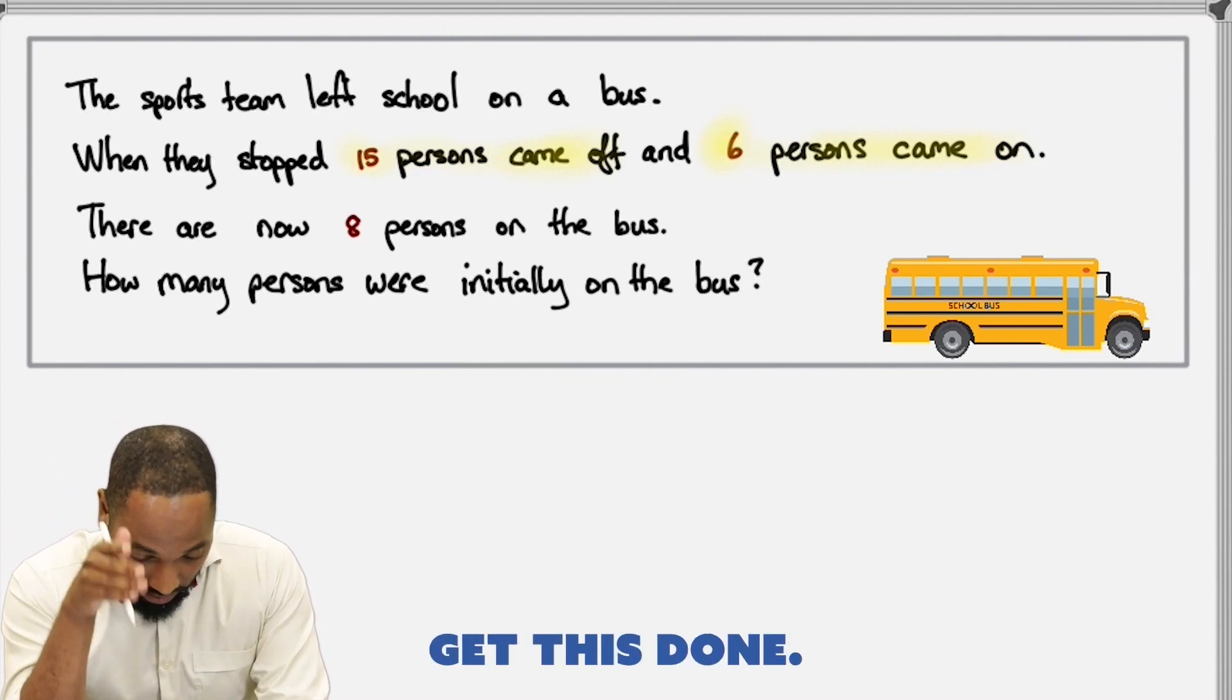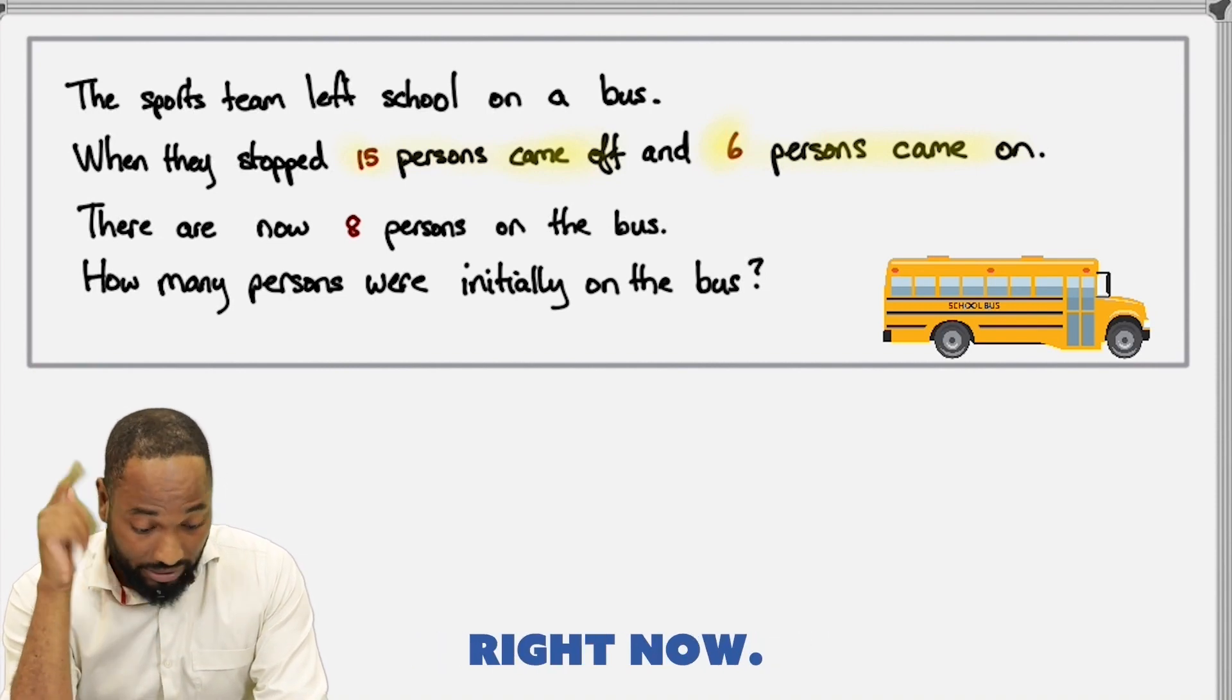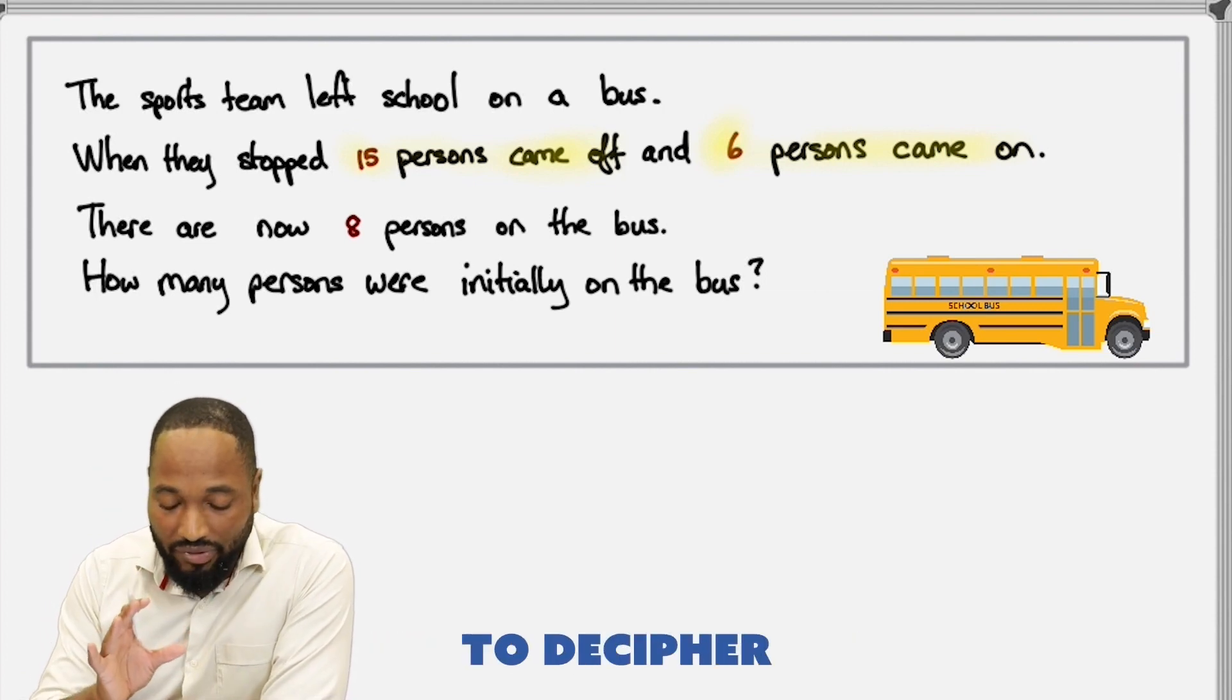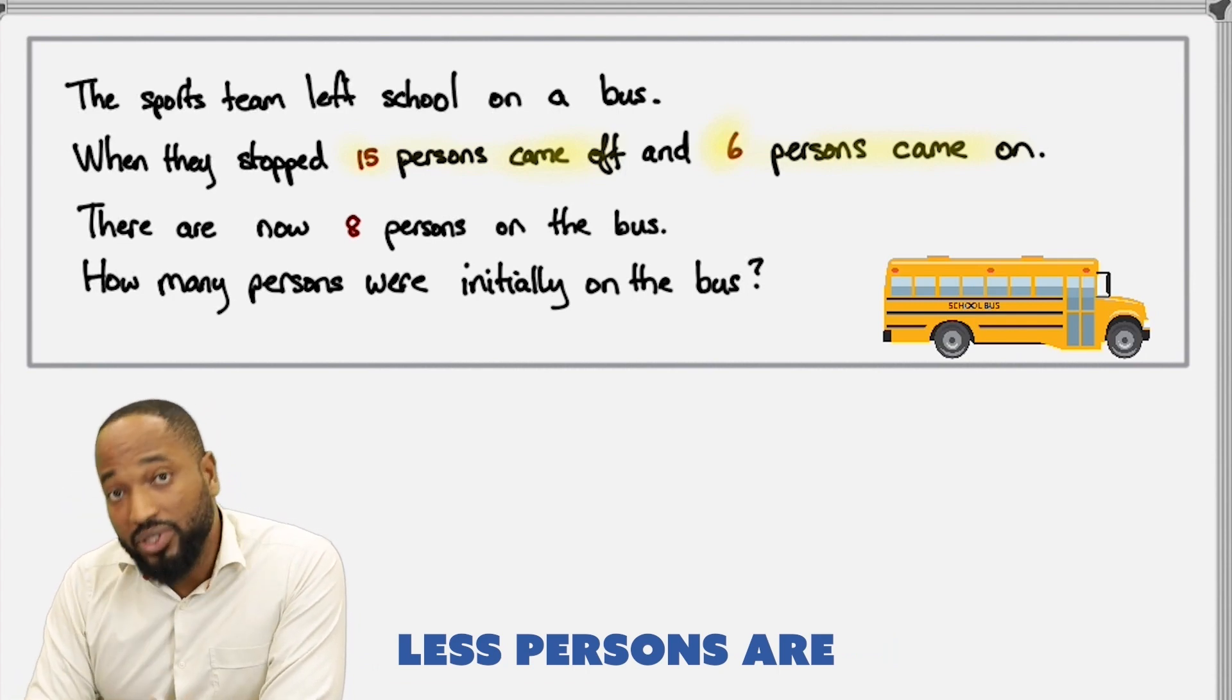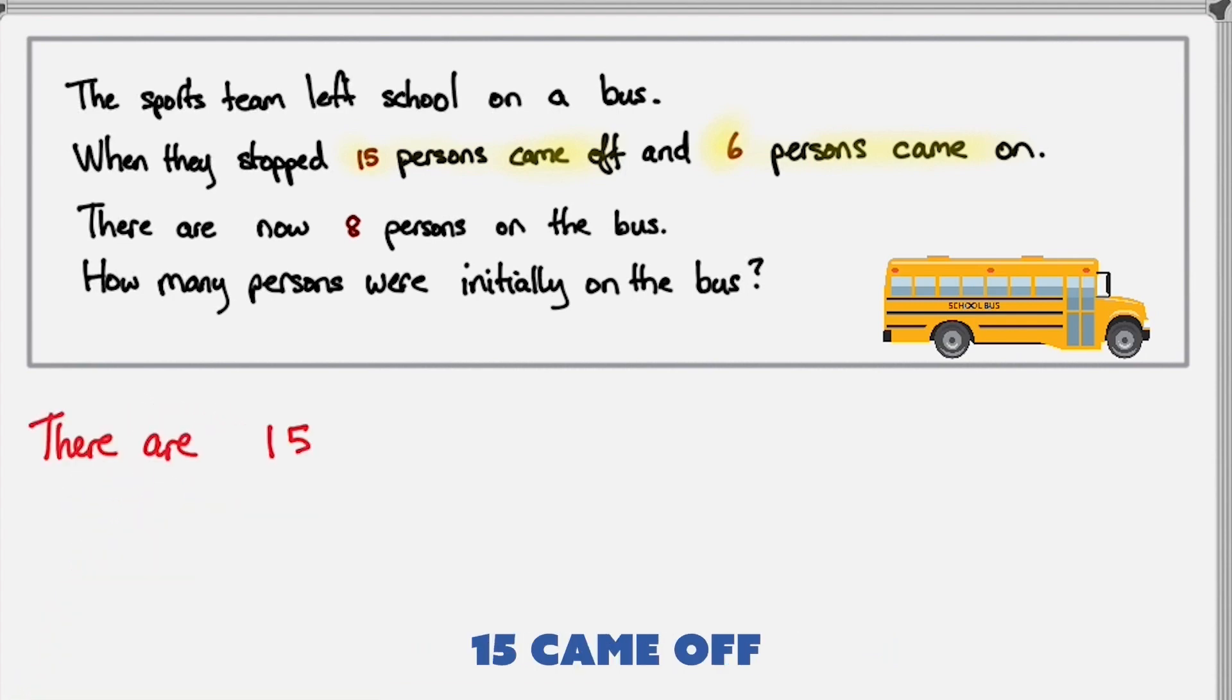I'm going to do the answer now. The important thing about this question is the right proper statements. I want to decipher, figure out, how much less persons are on the bus. There are 15 came off but 6 came back on, so let's subtract that. 15 minus 6 is 9 less persons on the bus.